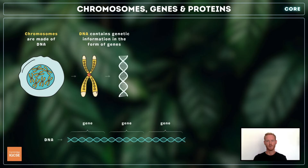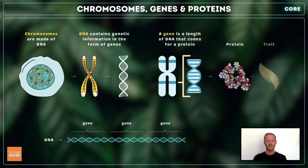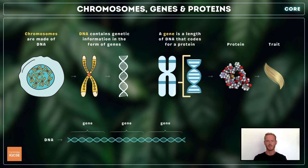Chromosomes are the structures within the nuclei of cells that contain the organism's genetic information. Each chromosome is composed of an extremely long single strand of DNA made up of hundreds of sections called genes. Each gene contains instructions that are used to synthesise a different protein in the body, meaning that genes determine the expression of specific traits or characteristics like eye colour, hair colour, height and blood type.